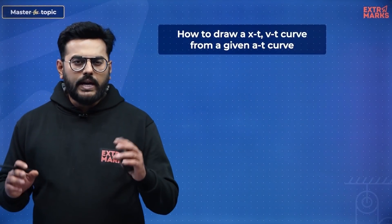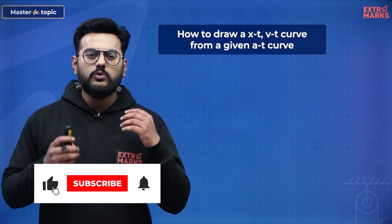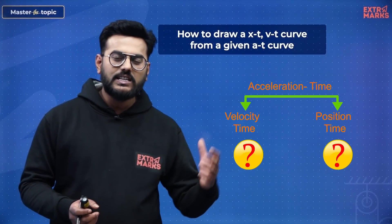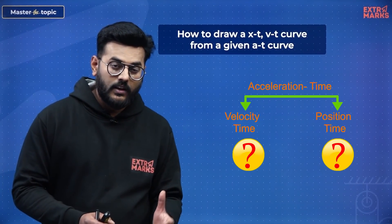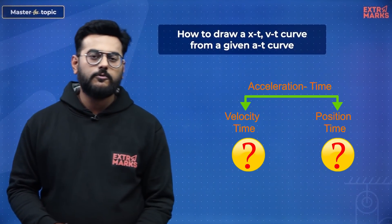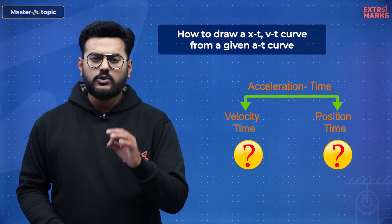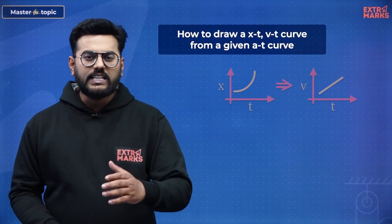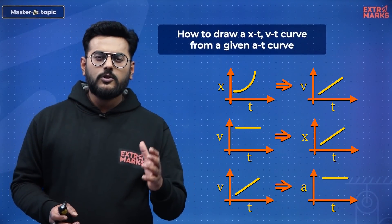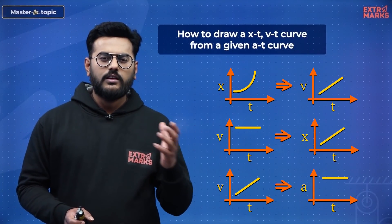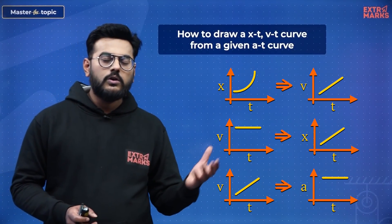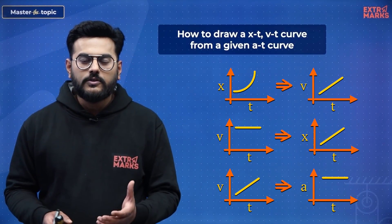To begin, I'd like to ask you one very simple question: how do you draw an XT and a VT curve from a given AT curve? Students have always faced difficulty with the conversion of graphs — whether it's XT to VT, VT to XT, or VT to AT. There's always been confusion, and the reason can be not understanding how a graph is changing.